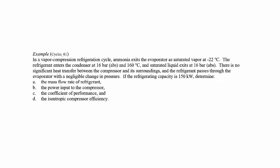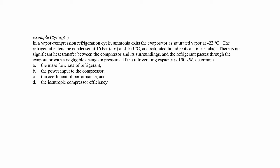In this example we have a vapor compression refrigeration cycle using ammonia as the working fluid. We're told that it exits the evaporator as a saturated vapor at a particular temperature, enters the condenser at a particular pressure and temperature, and then exits as a saturated liquid at a particular pressure. There's no significant heat transfer between the compressor and its surroundings, and the refrigerant passes through the evaporator with a negligible change in pressure. The refrigerating capacity is 150 kilowatts, and we need to determine a number of things.